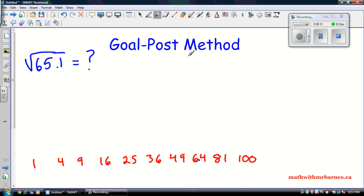One method we discussed was actually called the goalpost method. So how the goalpost method starts is we draw our goalie net, and inside the goalie net we put our number, so 65.1.